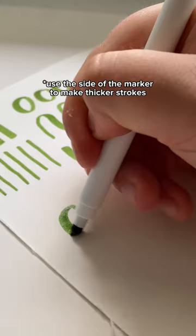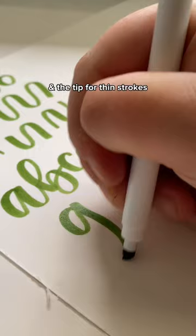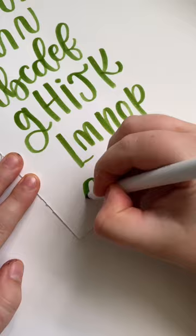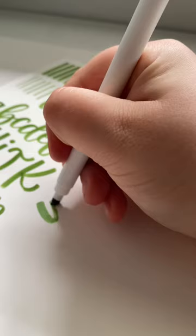You can use the side of the marker to make thick strokes and then the tip to make thin strokes. Apply that into handwriting, cursive, printing—it literally doesn't matter, whatever font you want. That's just an easy hack to make your words look like lettering.